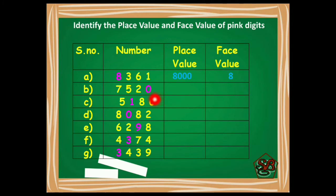Moving on to the next. Here the number given is 7520, and we have to identify the place value of 0. As I told you, 0 always remains 0 no matter at which place it is. So place value of 0 will be 0 and face value will also be 0.